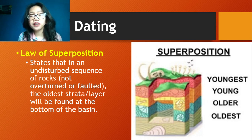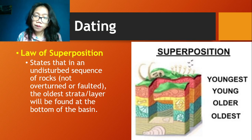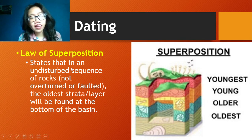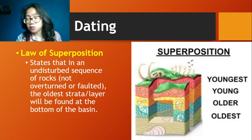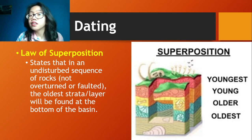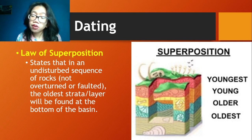To understand how relative dating works, there are certain principles you have to understand. First, you have the law of superposition. When we say law of superposition, it's always the lower layer which is the oldest. It states that in an undisturbed sequence of rocks, the oldest strata layer will be found at the bottom. The law of superposition is easily visible if the landscape has not been altered — whether by normal earth processes, plate tectonics, earthquakes, or human activity — and you can then easily use it to relatively date your rocks and fossils.